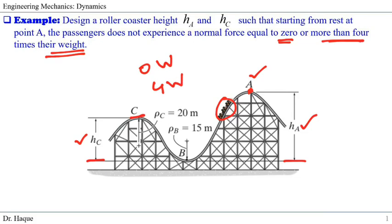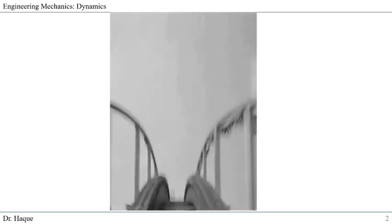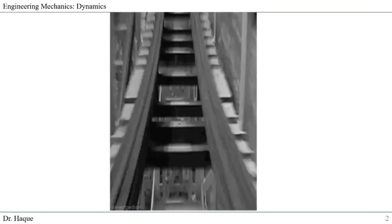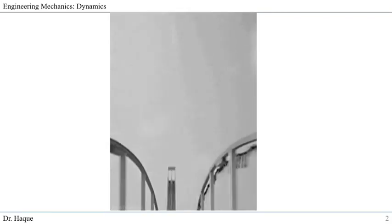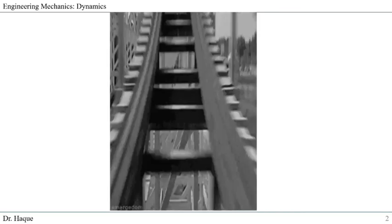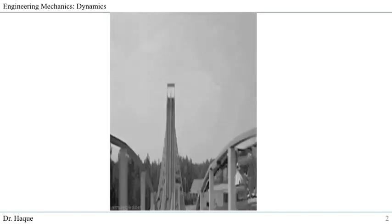Before solving, let's talk about a roller coaster a little bit to understand the problem better. A typical roller coaster has up and down motion — you're traveling on a curvilinear path, constantly changing direction of motion, and experiencing acceleration and deceleration.